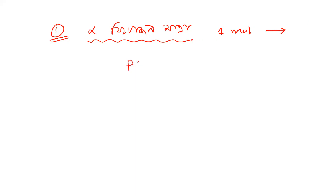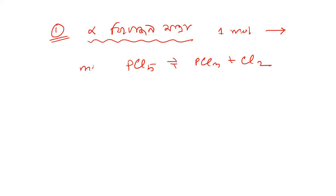There is phosphorus pentachloride like this. There is phosphorus trichloride and chloride. All the reactants and products are in gaseous state. We get into the number of moles: initially 0.1 mol, and 0.0, 0.0 for the products.